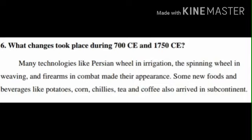Question number 6: What changes took place between 700 CE and 1750 CE? The answer is many technologies like the Persian wheel in irrigation, the spinning wheel in weaving and firearms in combat made their appearance. Some new foods and beverages like potatoes, corn, chilies, tea and coffee also arrived in the subcontinent.